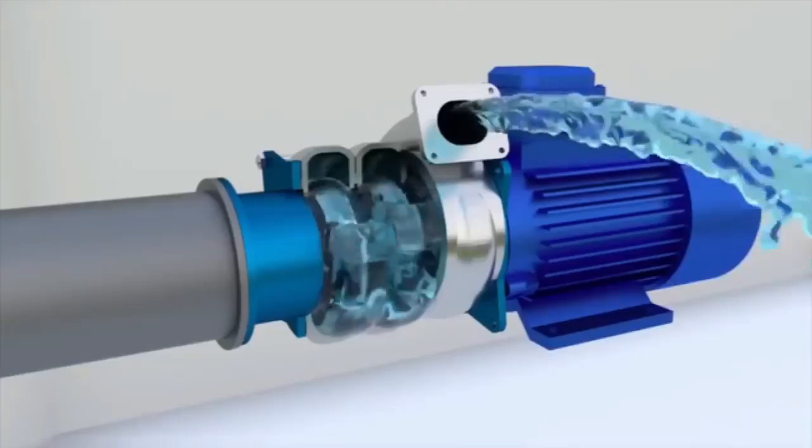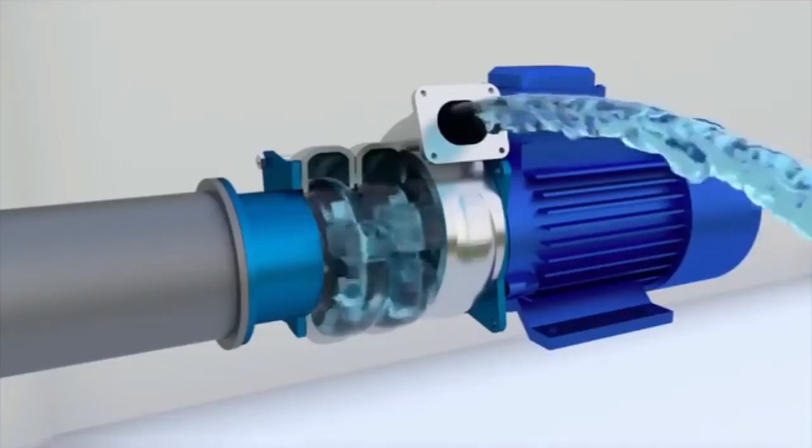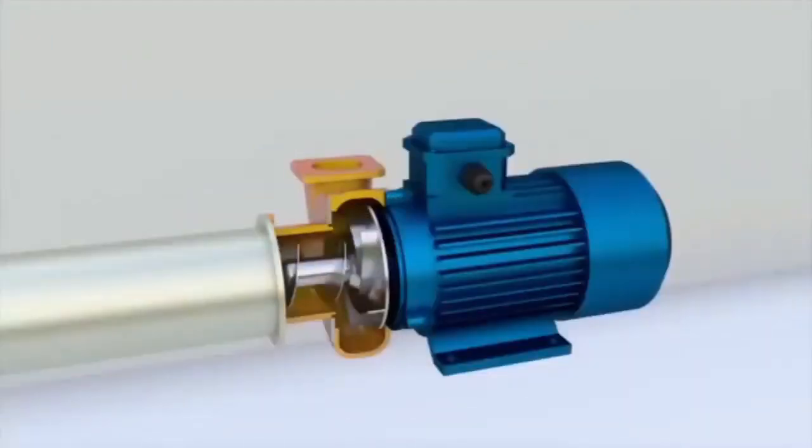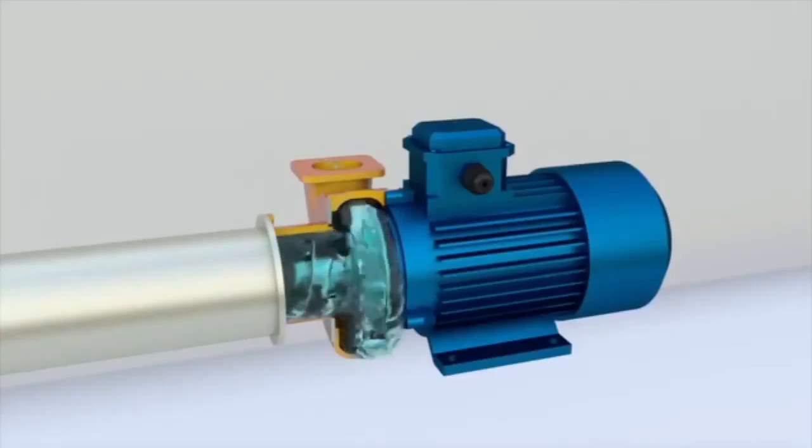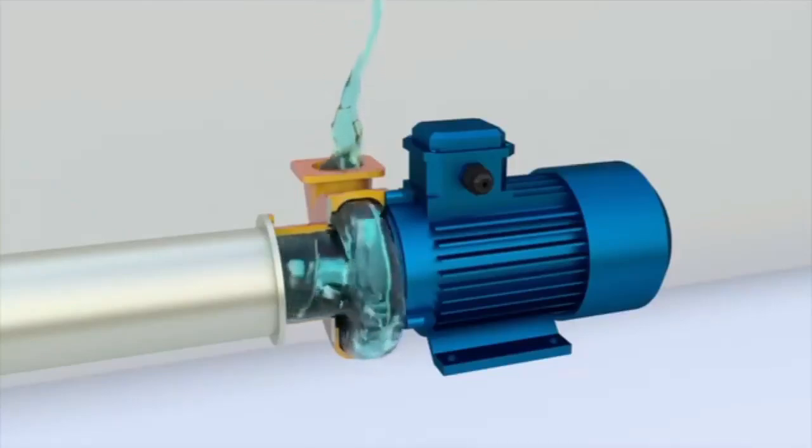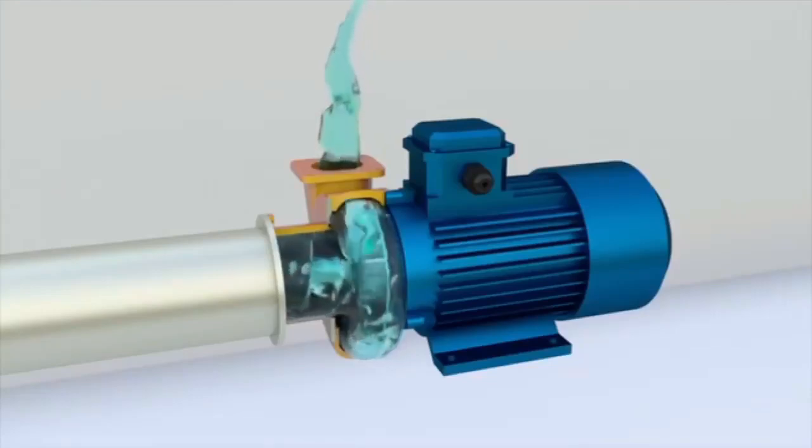Using a multi-stage arrangement can increase the head of the pump many times over, as the impellers are mounted in series and each of them increases the head. In multi-stage pumps, different impellers can be used. For example, a screw centrifugal pump has an auger on the first stage and a centrifugal impeller on the second stage.